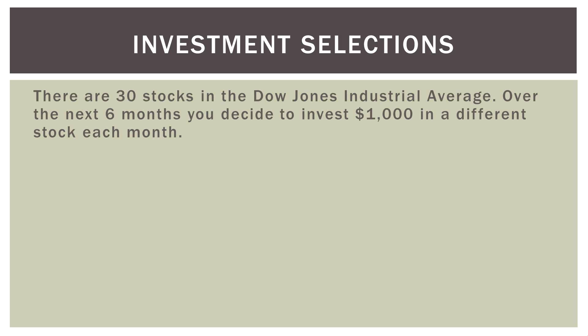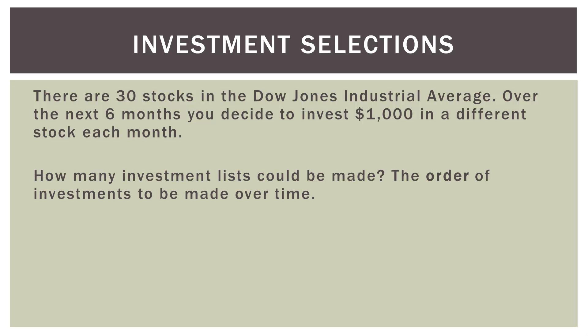Let's talk about another example: investment selections. There are 30 stocks in the Dow Jones Industrial Average. Over the next six months, you decide to invest $1,000 in a different stock each month. In the first month you have 30 choices; in the second month you'll have 29 choices because you already made one selection in the first month; in the third month 28 choices, and so on. You can see the order matters — first month 30, next month 29, etc.